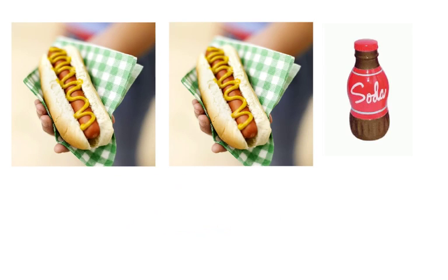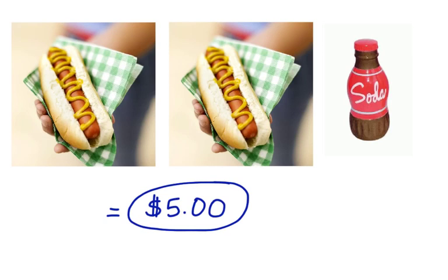Jesse bought one hot dog and one soda, and the total cost for a hot dog and a soda was $3.25. But if Jesse had bought two hot dogs and a soda, the cost would have been $5. Can you figure out how much it costs for one hot dog? Can you figure out how much it costs for the soda?